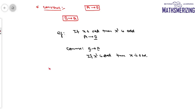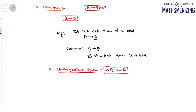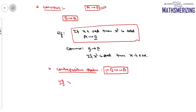Another concept in implication is the contrapositive statement. If the statement is A→B, then its contrapositive is ~B→~A. For example, if A→B is 'if x is odd, then x² is odd,' then the contrapositive is: 'if x² is not odd, then x is not odd.'